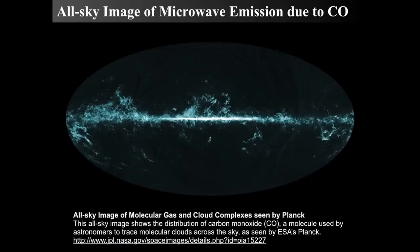Carbon monoxide, CO, also radiates in microwave wavelengths and mirrors the 21-centimeter distribution. This is a map taken by the European Space Agency's Planck probe. Carbon monoxide is used as a tracer for molecular hydrogen, which doesn't emit anything easily observed on its own. We know there's much more molecular hydrogen near where the carbon monoxide is, so we use that as a tracer.